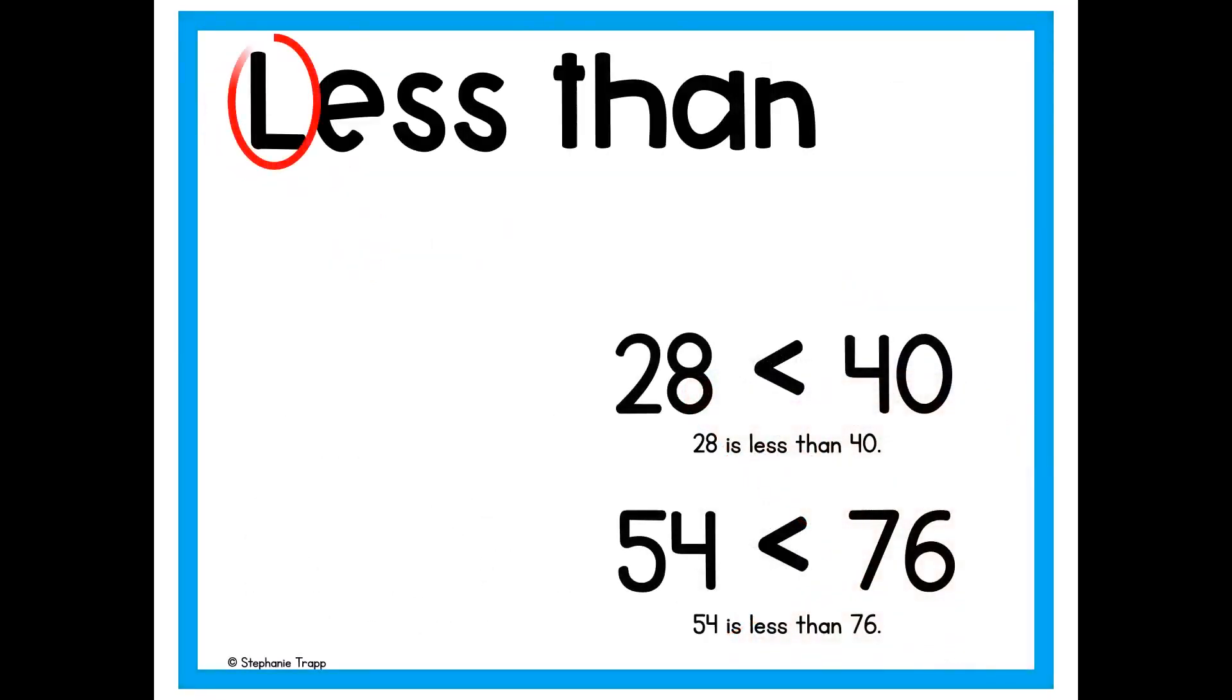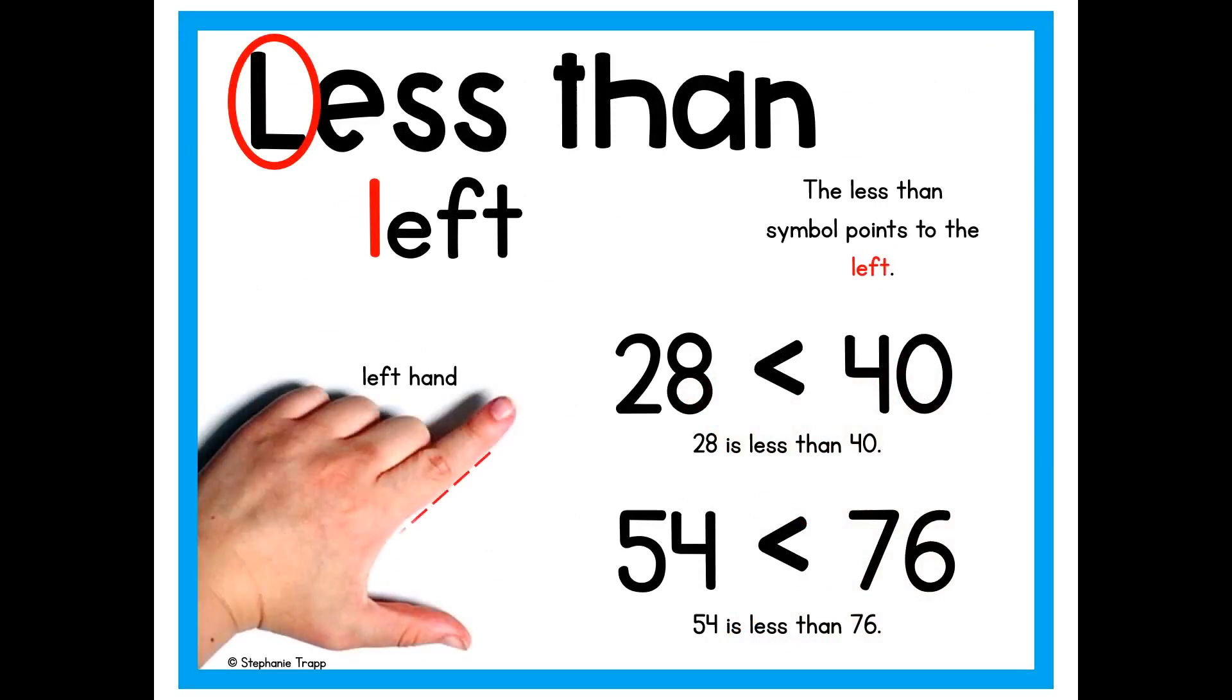The L in less stands for left. The less than symbol always points to the left. Again, you can look at your left hand as a reminder. The index finger and thumb on your left hand make the less than symbol. When you're drawing the less than symbol, you go left first with your pencil and then back to the right to make the shape.